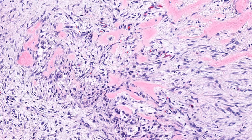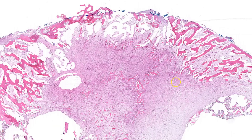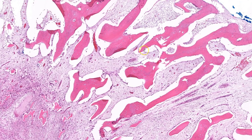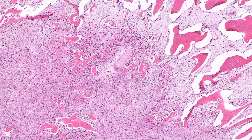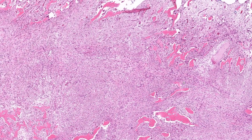Now, I admit this one is tricky, especially on biopsy. But to give you a better sense of this entity, I'm going to show an excision specimen. The key feature here is zonation. At the periphery, we have the well-formed trabeculae of mature lamellar bone, and then moving in towards the center, this transitions into woven bone, with the center of the lesion being composed of this myofibroblastic proliferation.